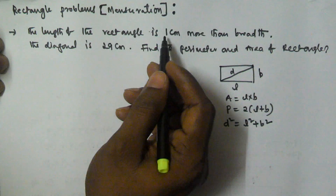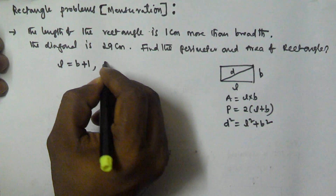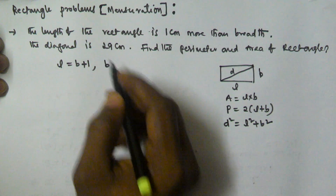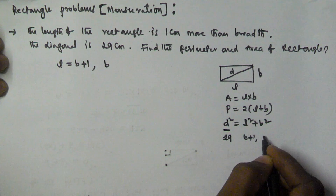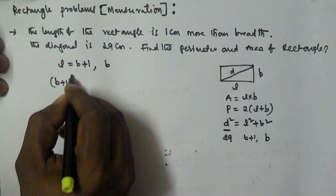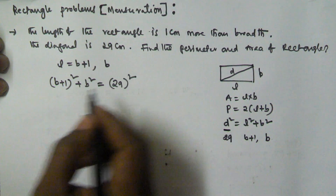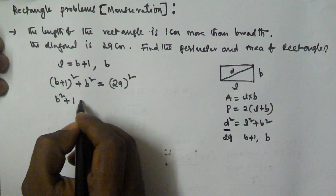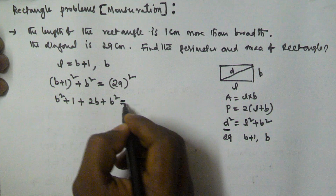It is given that the length of the rectangle is one centimeter more than the breadth, so the length is b + 1 and breadth is b. The diagonal is 29 centimeters, so substituting into the formula: (b + 1)² + b² = 29².